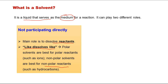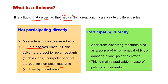There is another category — direct participation — though it is not as common. To understand this, we need to know polar protic solvents. This category is mainly applicable for polar protic solvents. Apart from dissolving reactants, they can also act as a source of proton, remove a proton showing acidic or basic behavior, or donate a lone pair of electrons.